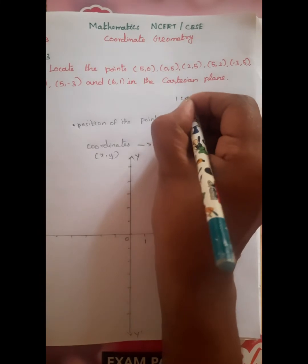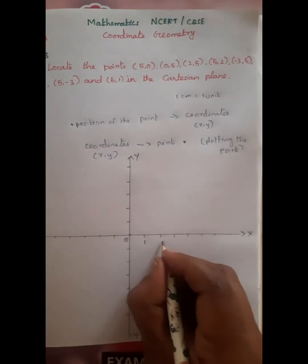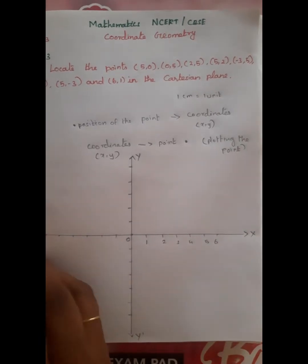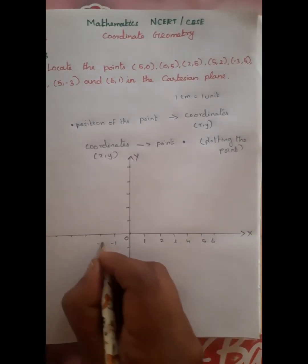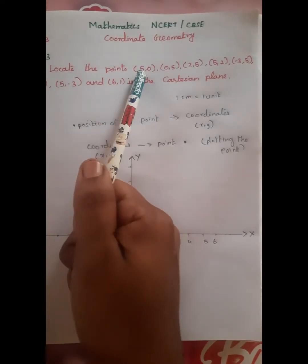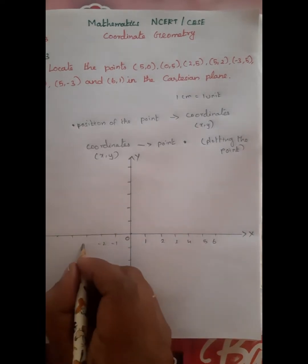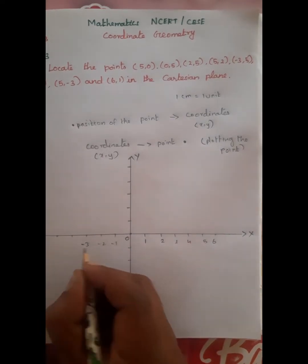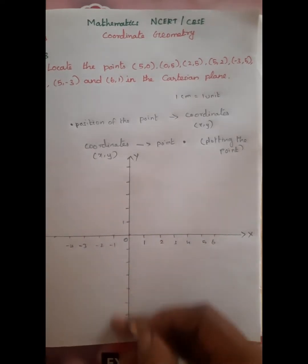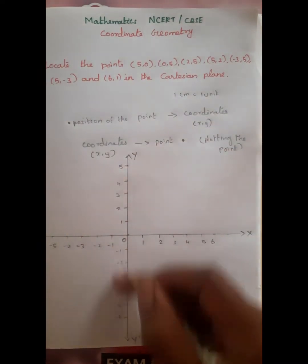1 centimeter is equal to 1 unit. On the positive x-axis we mark 1, 2, 3, 4, 5, 6. On the negative side: minus 1, minus 2. The maximum positive point is 6, and on the negative side we go to minus 3. This side is positive and the other side is negative.